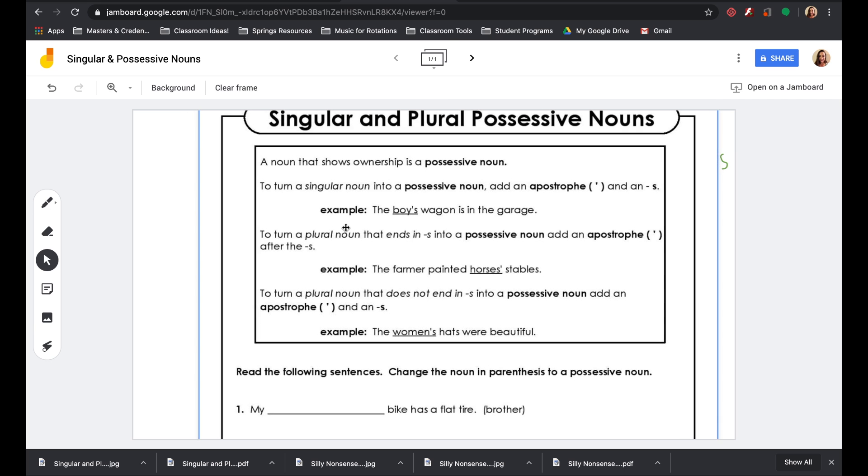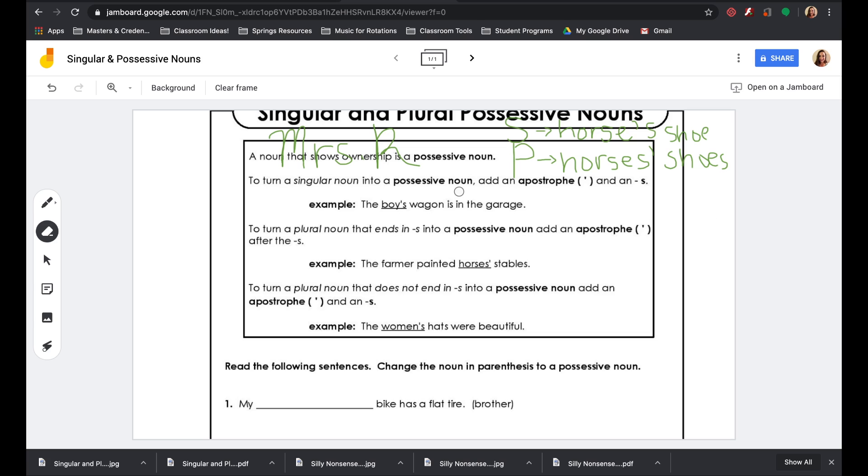Let's go ahead and look at the examples they give us. A noun that shows ownership is a possessive noun. To turn a singular noun into a possessive noun, add an apostrophe and add an S. Example: the boy's wagon is in the garage. See how they put an apostrophe and then an S? It's one boy. We need to put an apostrophe and an S to show that it's his wagon.